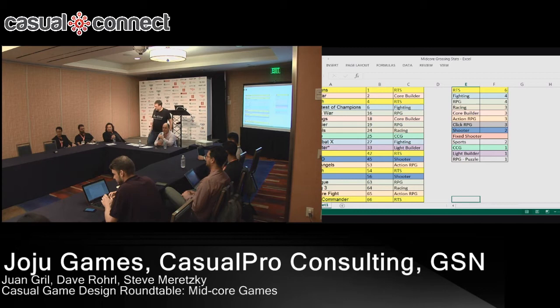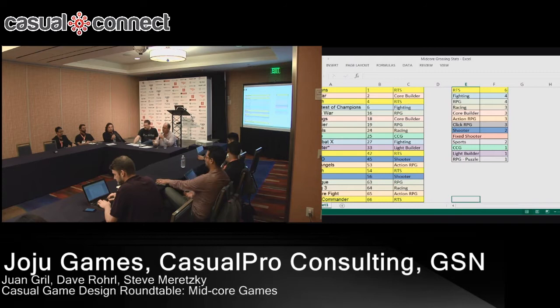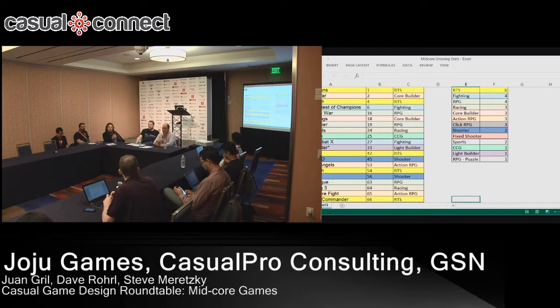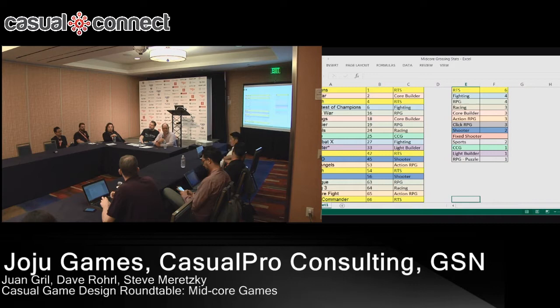I prepared a list of topics that we can go through and chew through, but we also want to hear what you guys want to talk about. One observation I had over the last year is that there are a couple of genres that have emerged really strongly in the top grossing charts that basically didn't exist a year ago. These are things like fighting games, sports games, and there's a significant increase in shooters of various styles in the top 100 grossing. I wonder what people think is causing those things to emerge now — is this a change in player behavior, change in technology?